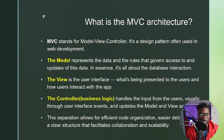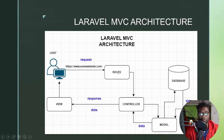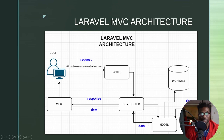This whole thing is about separation of functionality or concerns. This separation allows for efficient code organization, easier debugging, and a clear structure that facilitates collaboration and scalability. In the MVC diagram you can see the database, model, view, and controller. A user visiting a website sends a request in the form of a route; that route is handled by the controller, which decides whether to fetch data from the database or respond directly to the view.